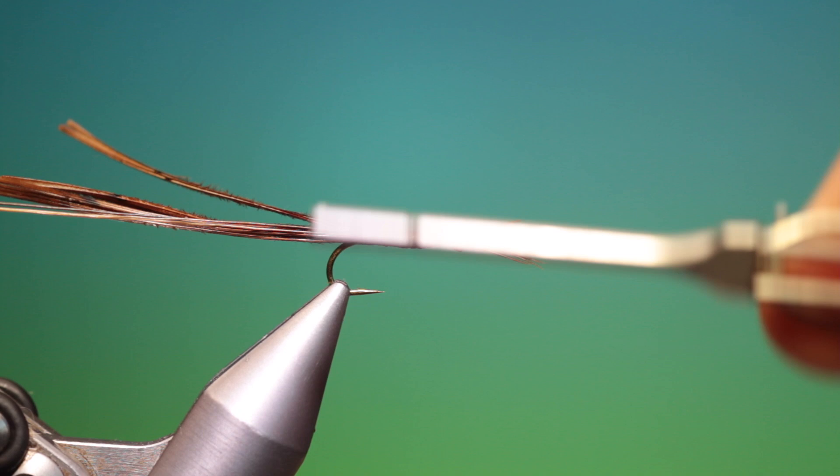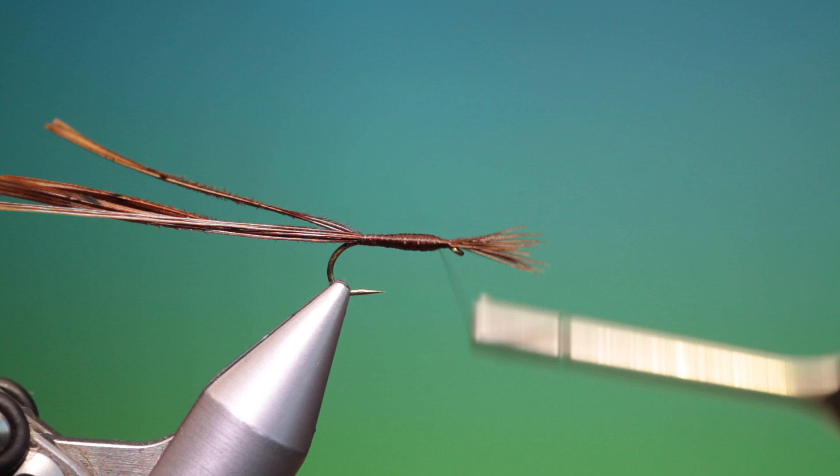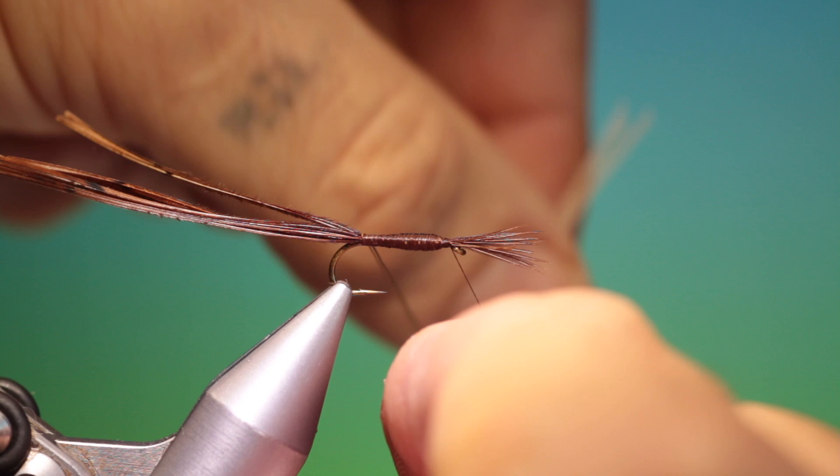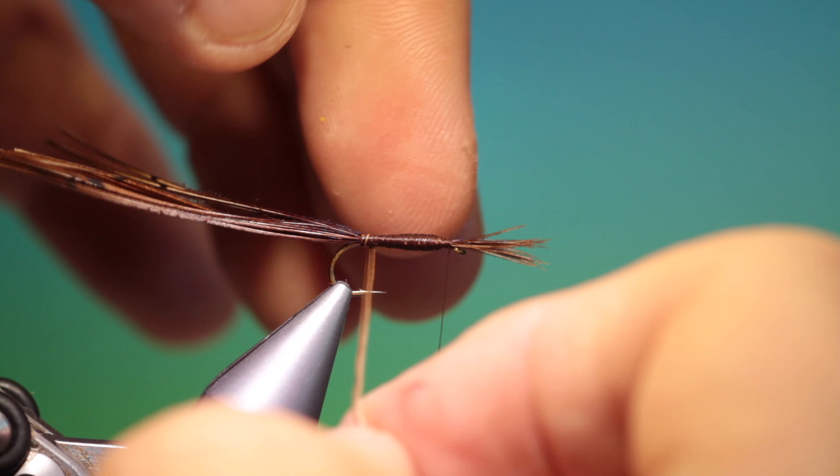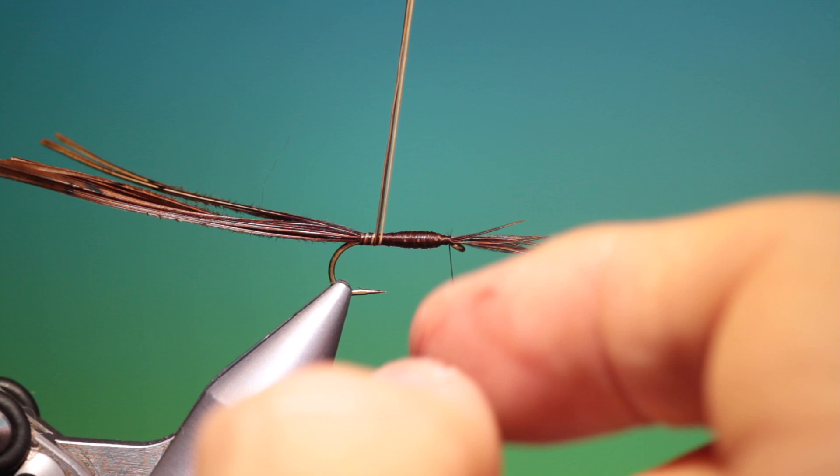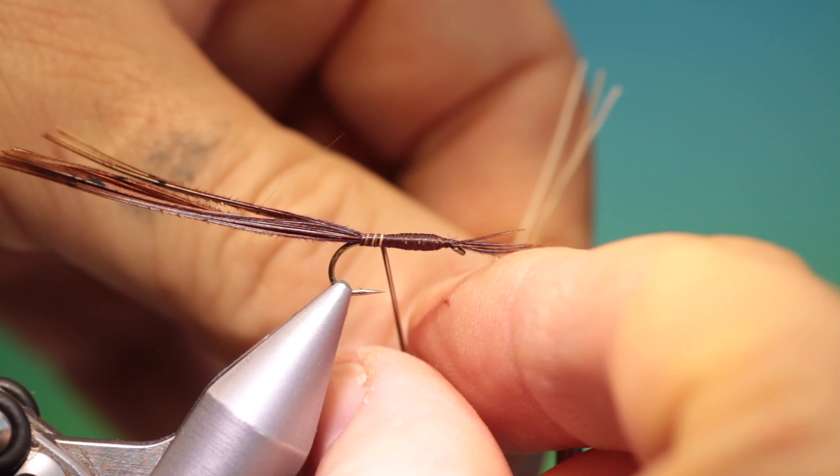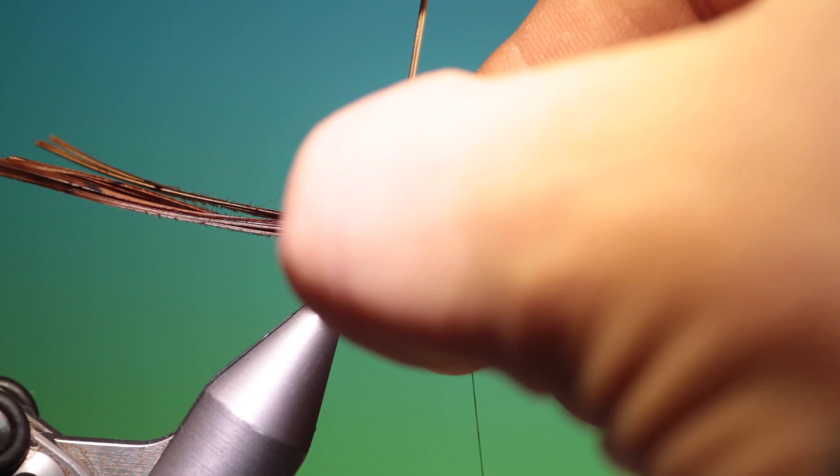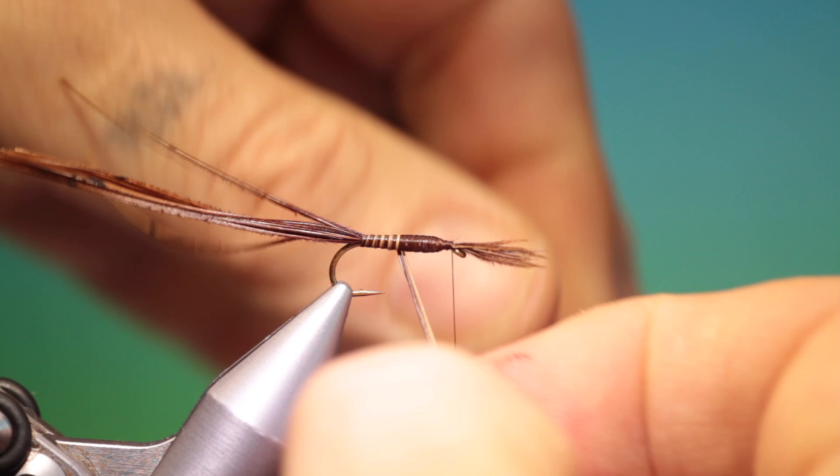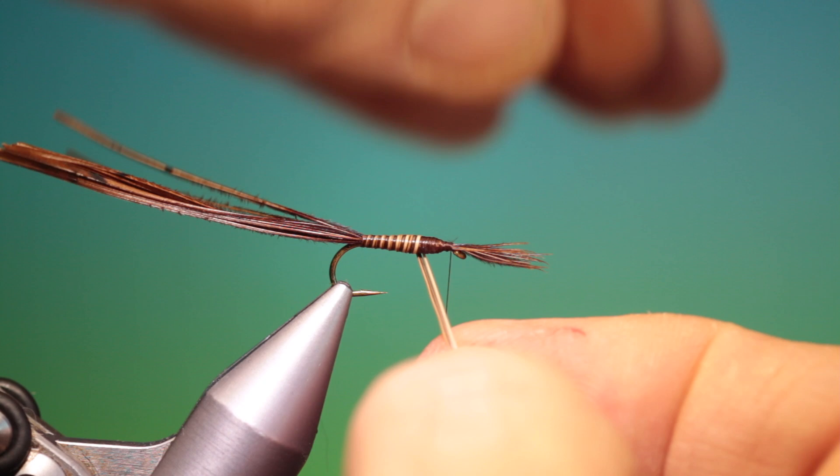This is an excellent little bug. You can fish it wet or dry. And we go back to the front to there and we'll take our three moose mane hairs and wrap these up, get them gathered and all the way up.